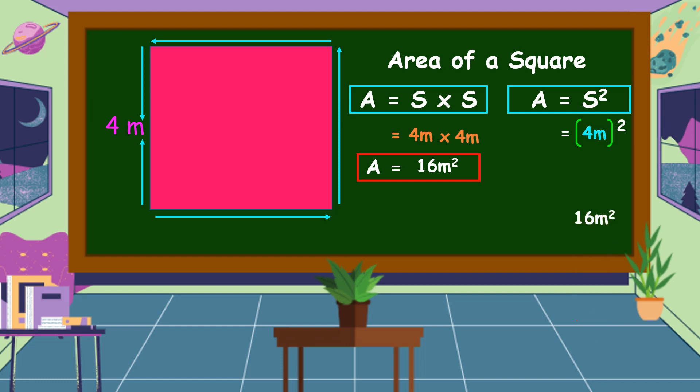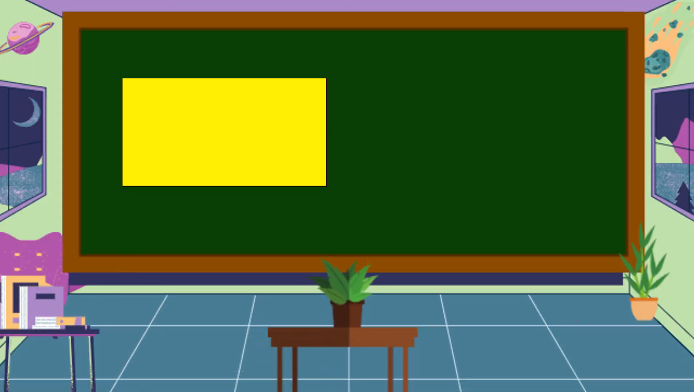These are the two formulas that we can use to find the area of a square. Do you know what plane figure this is? This is a rectangle. The two dimensions of a rectangle are the length and the width.